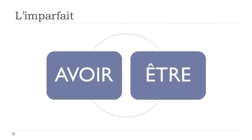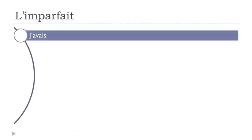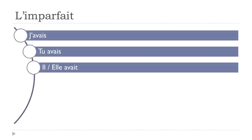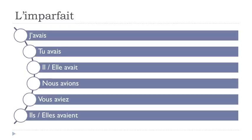Now for 'avoir' and 'être'. Avoir is quite straightforward: j'avais, tu avais, il avait, elle avait, nous avions, vous aviez, ils avaient, elles avaient. Orally it's easy — just remember the 'ave' sound: avais, avais, avait, avait. Notice the liaison in 'nous avions' and 'vous aviez'.